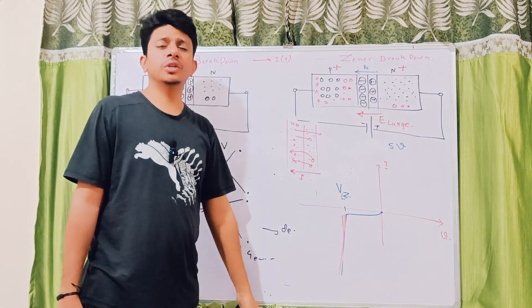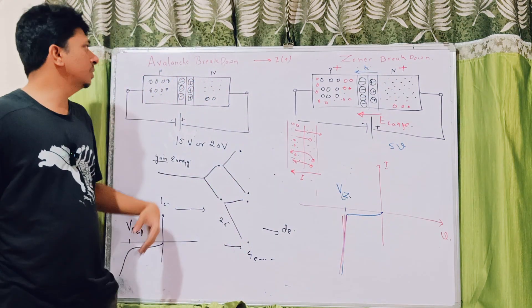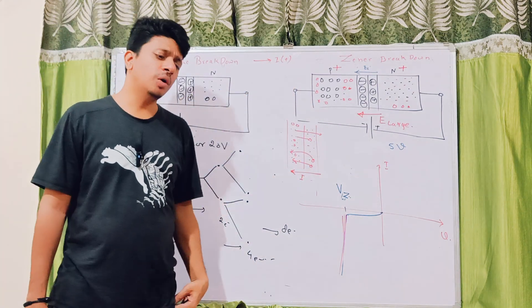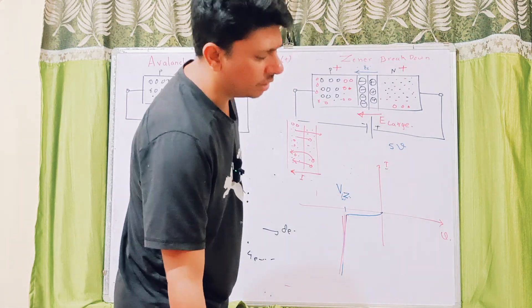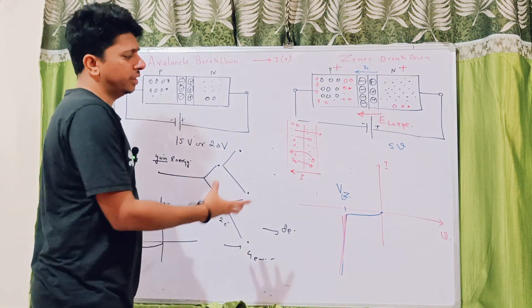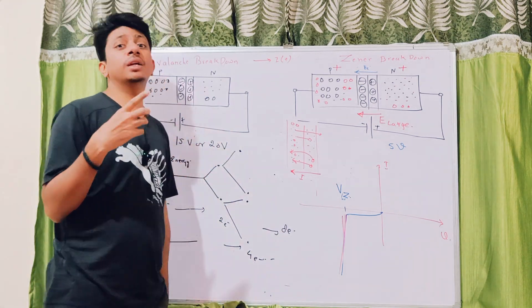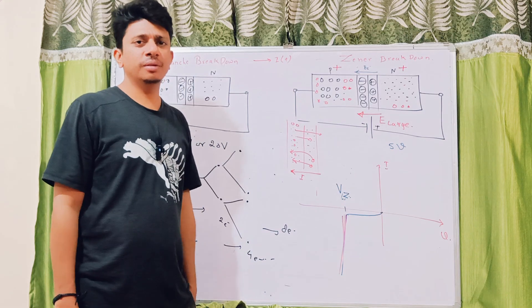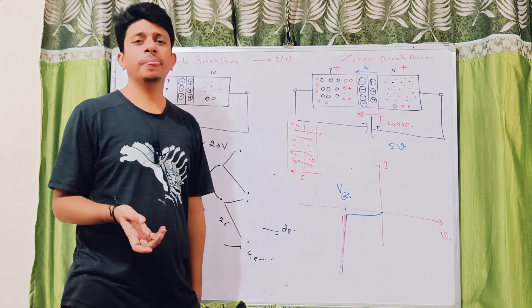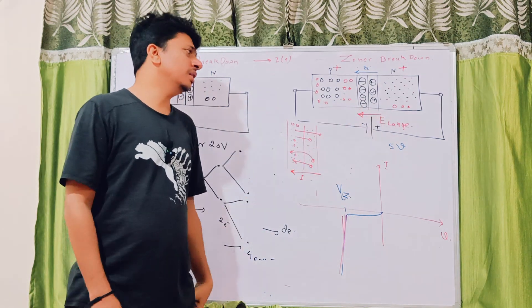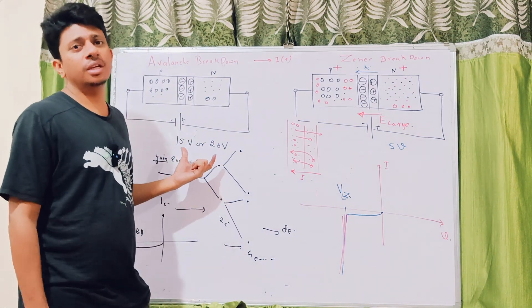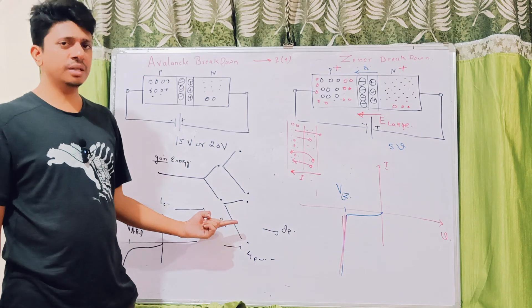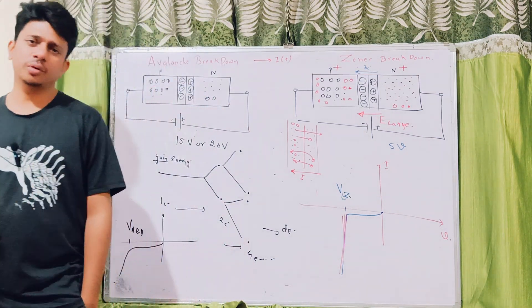Because of sudden rupturing of covalent bonds, large amounts of electrons and holes are generated in the depletion region at the junction, and there will be movement at the junction causing a large amount of current to flow. The application of Zener breakdown is in the voltage regulator circuit. If anyone asks you to draw the IV characteristics or explain the working of Zener or avalanche breakdown — in avalanche, one by one covalent bonds get broken because electrons are striking again and again, which is the avalanche mechanism.